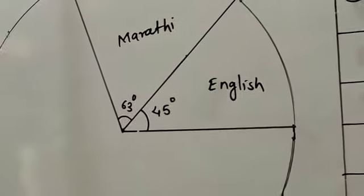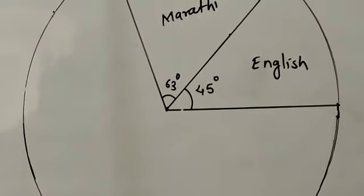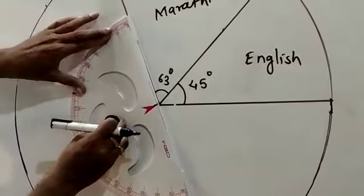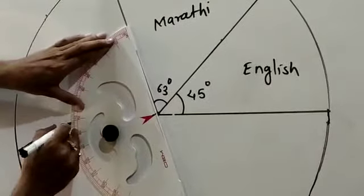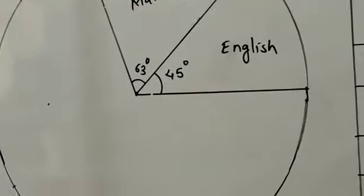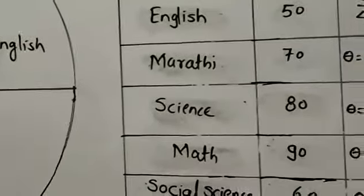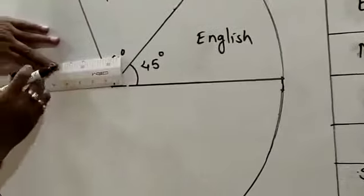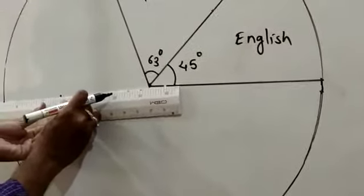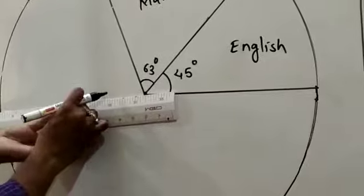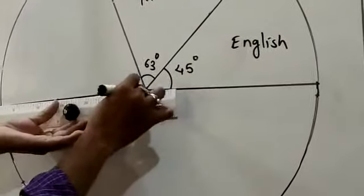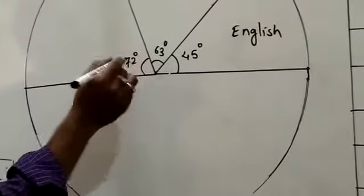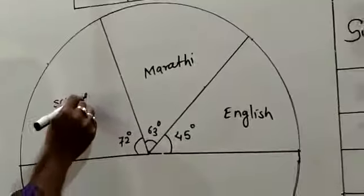Next is Science. The central angle of Science is 72 degrees. Adjust the protractor from 0 — 70 will come here, 72 will come here. Draw the radius through that point. This is the central angle of Science, 72 degrees.